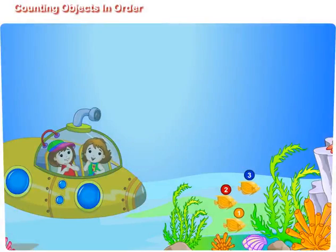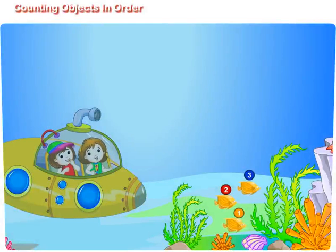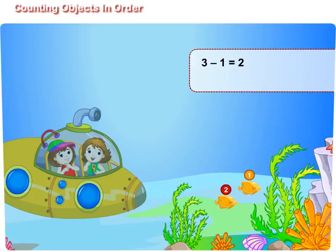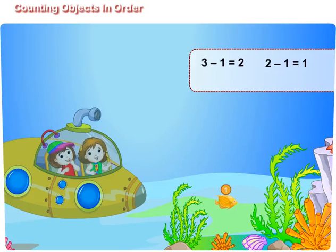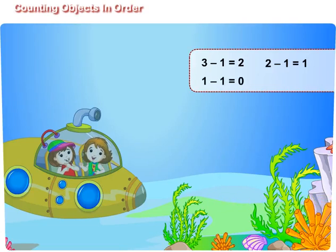Didi, look at those three golden fishes. Where? I could not see. Oh, one golden fish has gone away. Now there are only two. I still could not see. Didi, look at those plants. Oh, one more fish has gone away. Now there is only one. Maggie, I can see only the plants, but not the golden fish. Didi, the last golden fish is also going away. Now there is none.